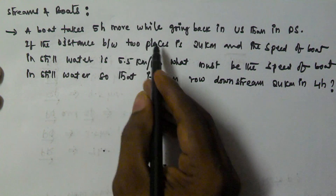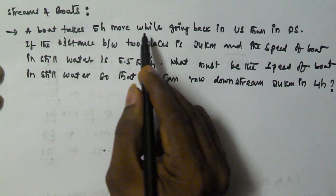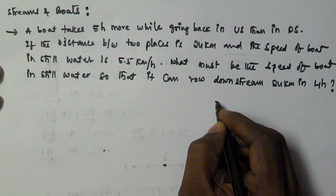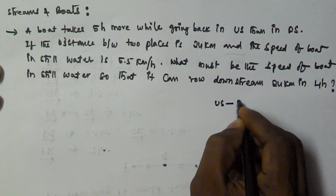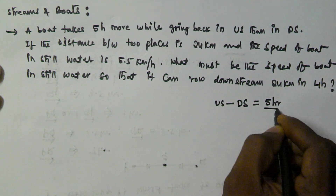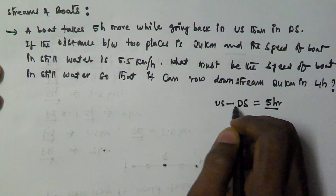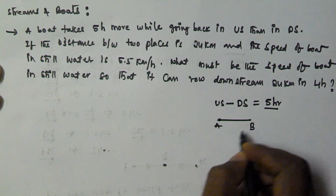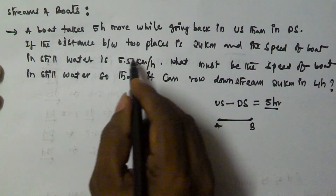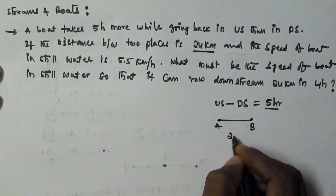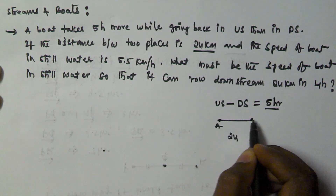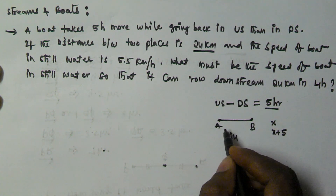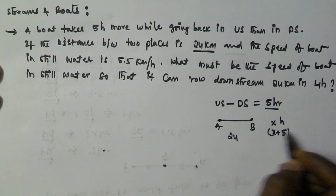A boat takes 5 hours more while going back in upstream than in downstream. So the time taken to upstream minus downstream is equal to 5 hours. Let us assume there are two positions A and B. The distance is given as 24 km. To travel from A to B it is taking x hours, and then B to A it is taking x plus 5 hours.